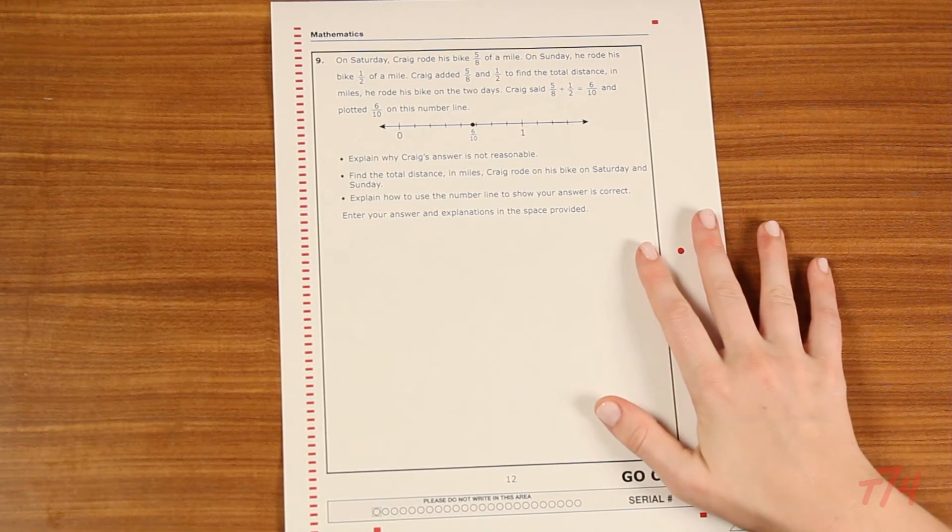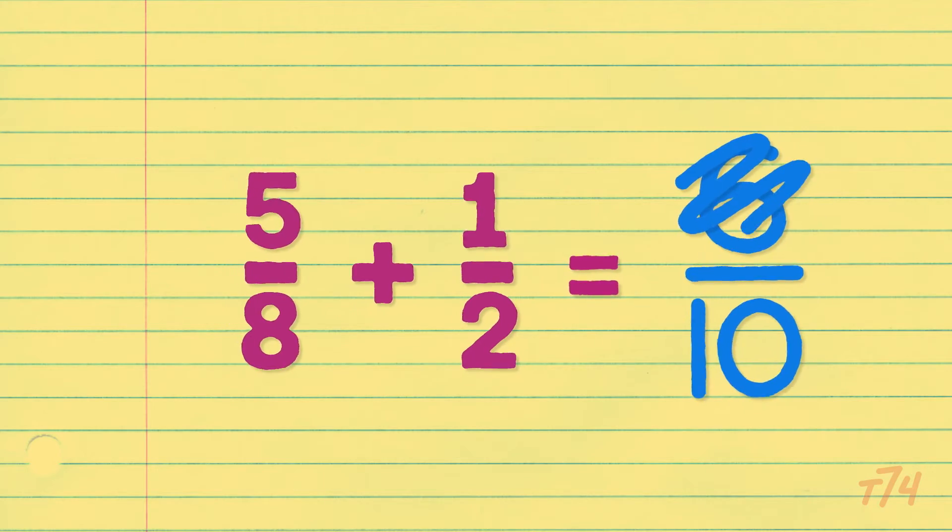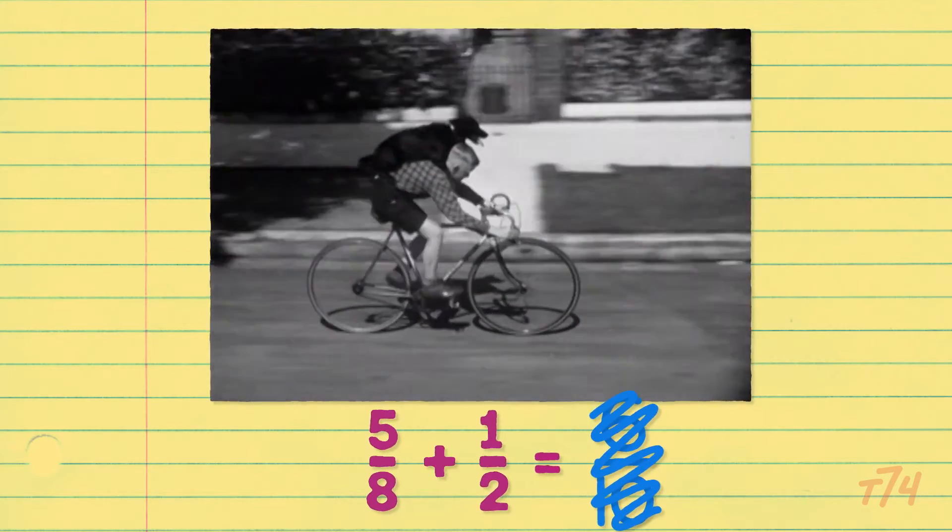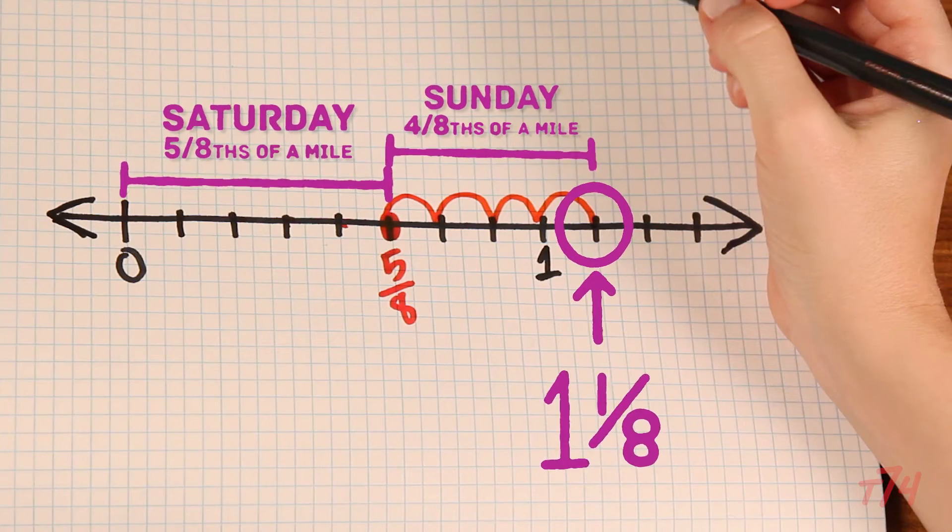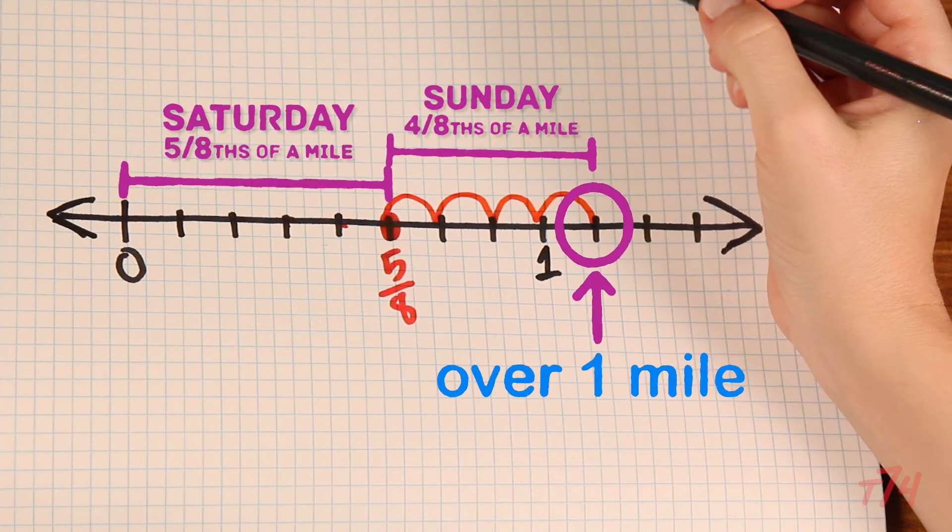Now let's get back to that first question. Why is Craig's answer all wrong? He says he biked 6/10 of a mile. The model helped me to see that he ran over one mile. So his answer would be unreasonable.